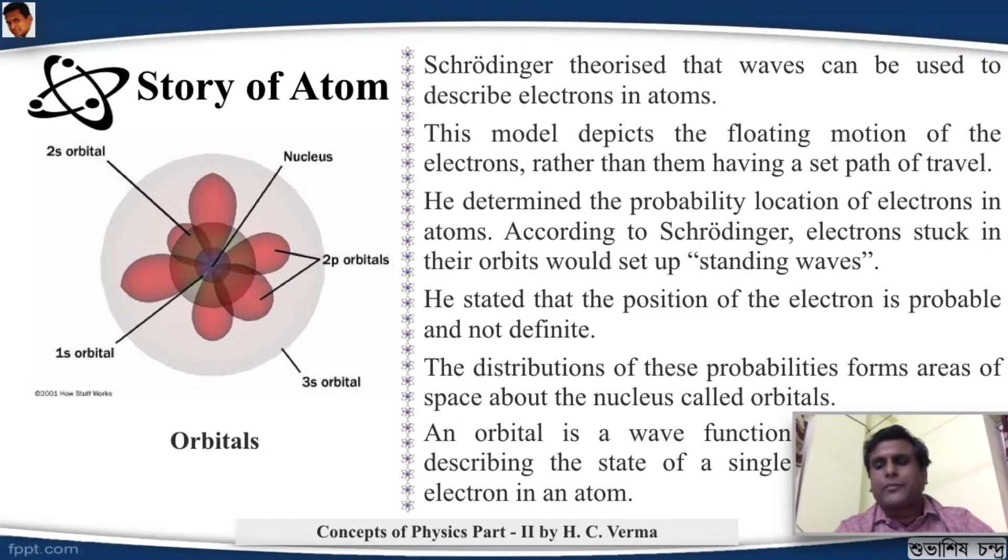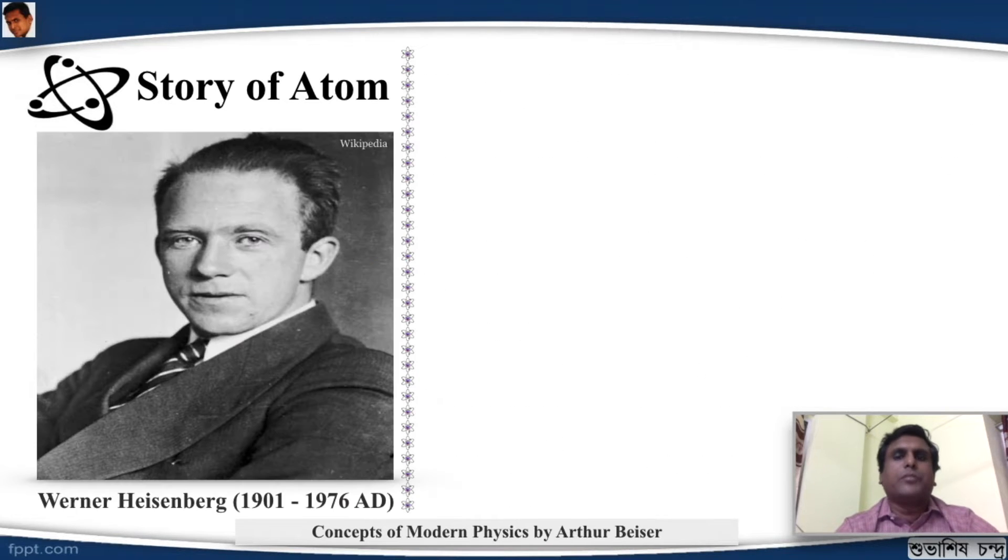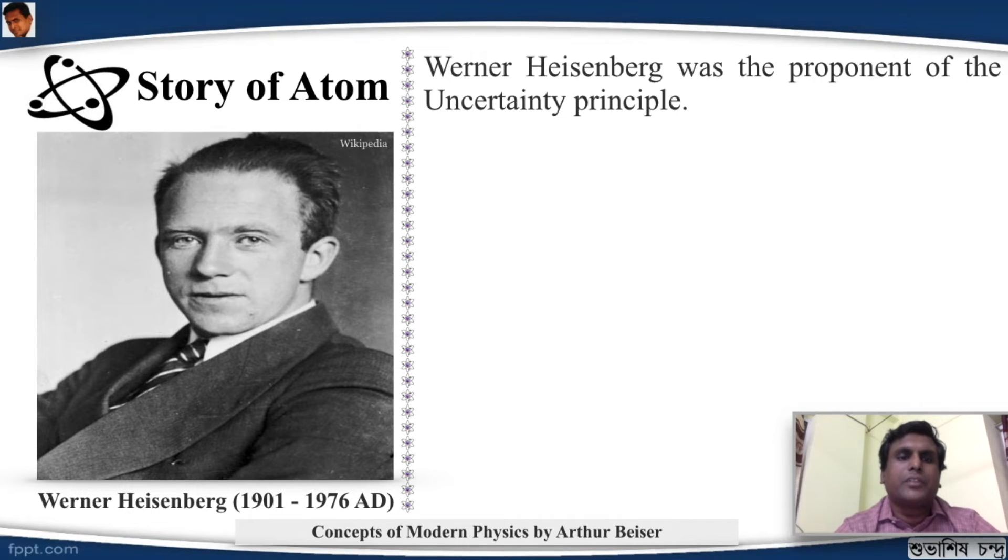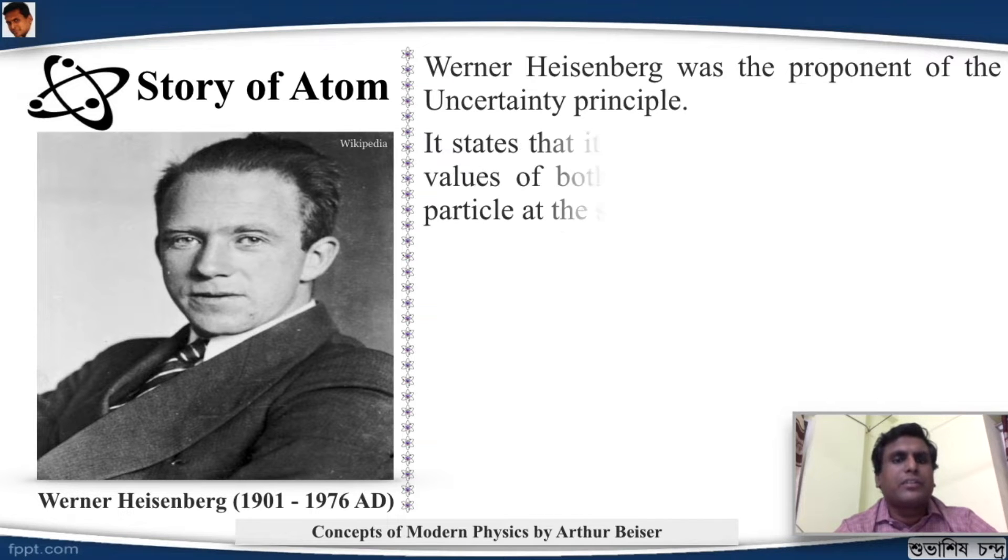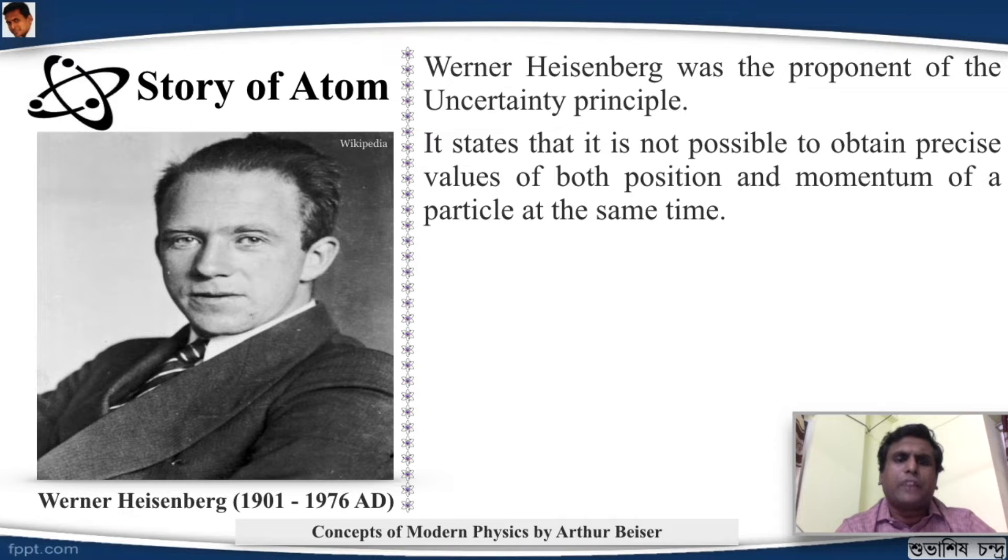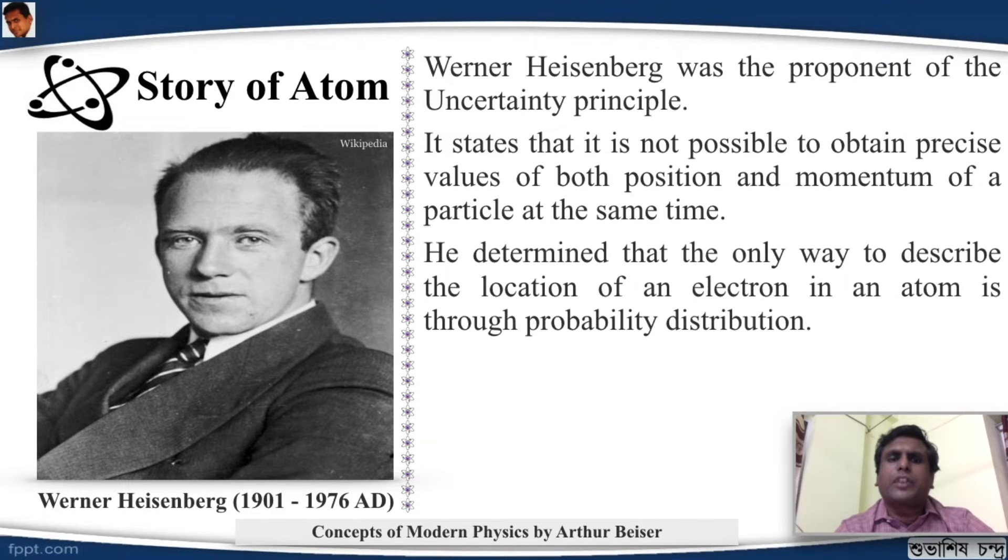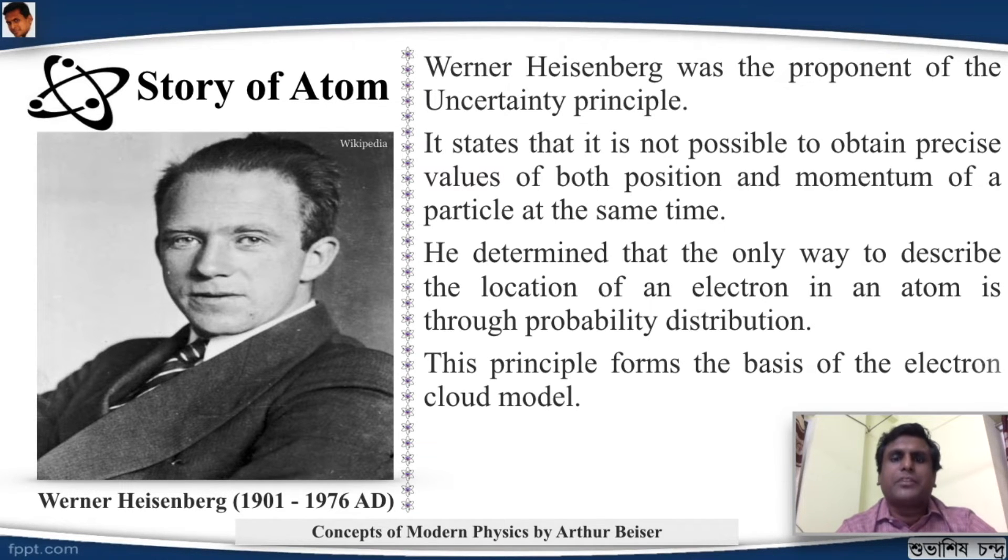Before we move to the atomic model that was derived out of Schrödinger's wave theory, we have to look into another great scientist, one of my favorites, Werner Heisenberg. Werner Heisenberg was a young scientist and one of the biggest genius the world has ever seen. He was the proponent of the uncertainty principle. The uncertainty principle states that it is not possible to obtain precise values of both position and momentum of a particle at the same time. He determined that the only way to describe the location of an electron is through probability distribution. That is, you can give a probability of where the atom will be, not the exact place. This principle is just that Schrödinger did it with wave theory, Heisenberg did it with mathematical models. This principle forms the basis of the electron cloud model.